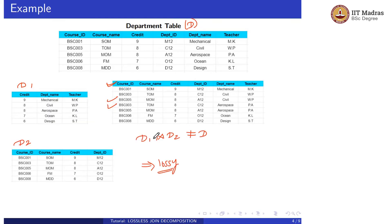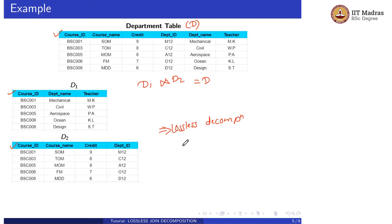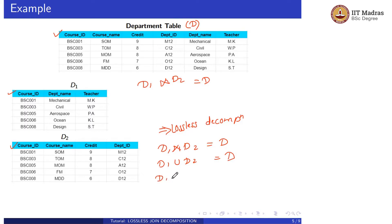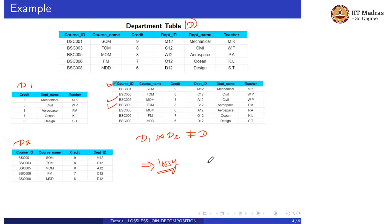From these two examples, we conclude that for a lossless decomposition, D1 natural join D2 must equal D, or D1 union D2 equals D. There must be some common attribute between decomposed relations to perform the natural join operation, so D1 intersection D2 should not be empty. In the previous example, D1 intersection D2 equals 'credit'.